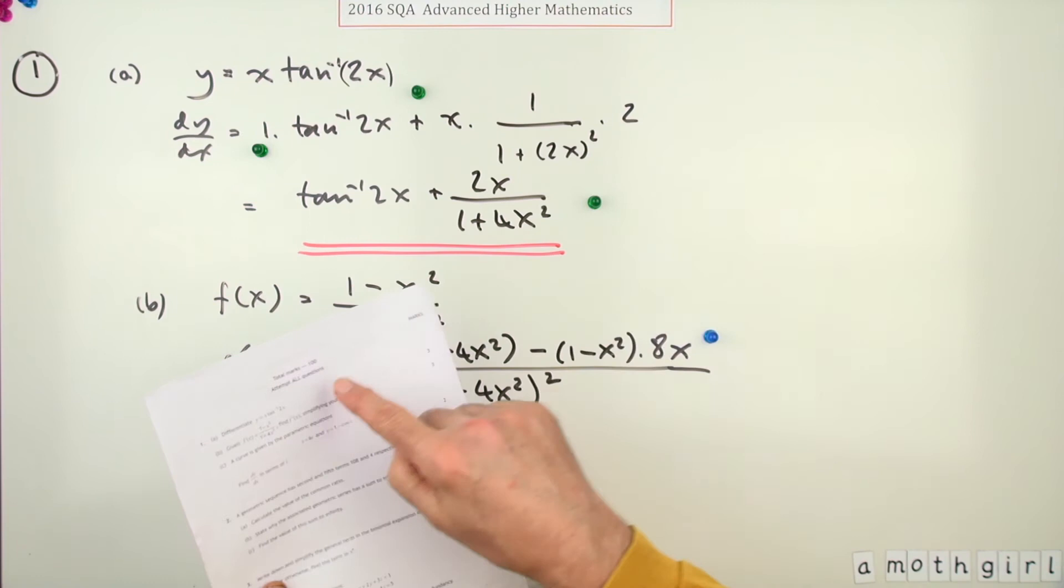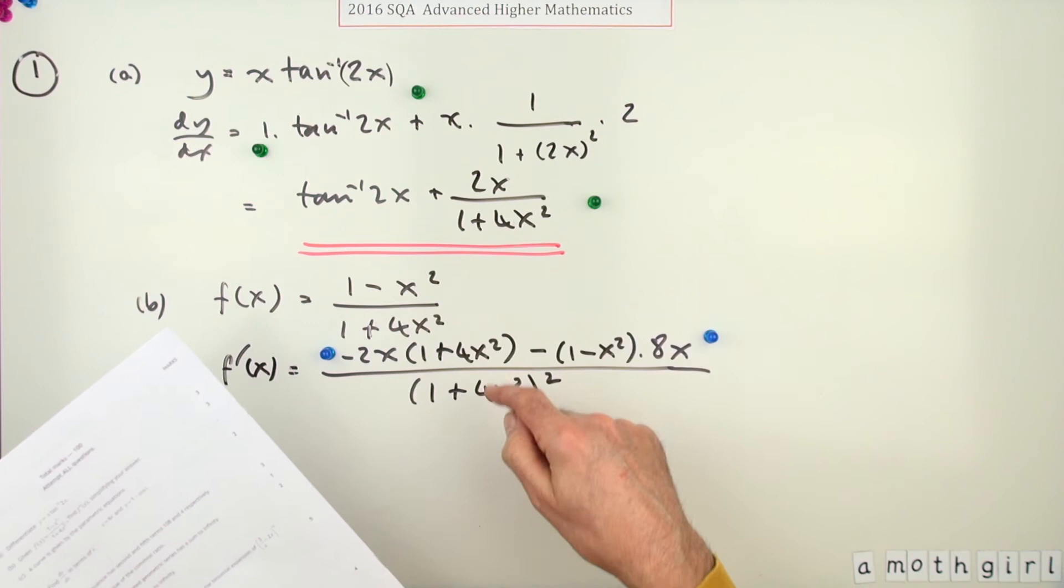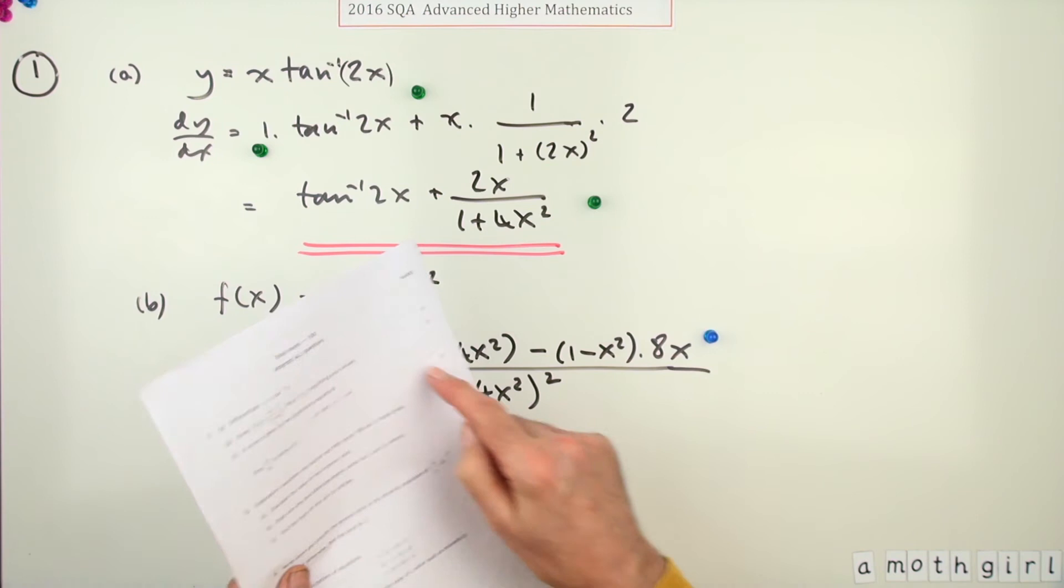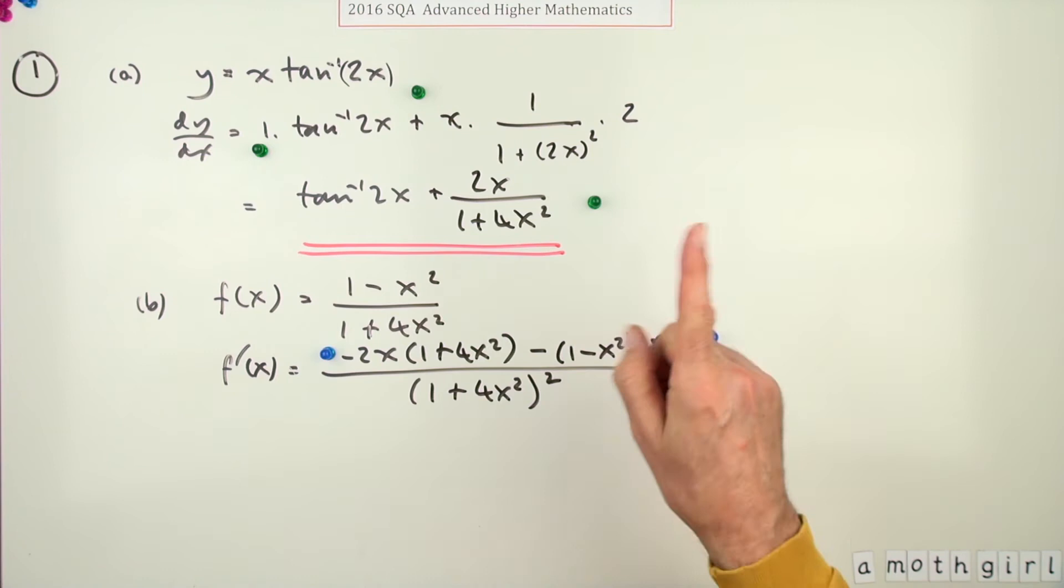After all, in the first one it just said differentiate and technically, the marking scheme said if you just left it as this underneath 2x all squared you would still have got this third mark. But here it specifically says simplify your answer, so you need to tidy this one up. You should tidy that one up anyway, it's just good manners. So what have we got here then? The denominator then is this.